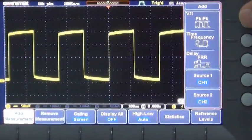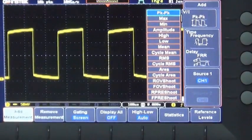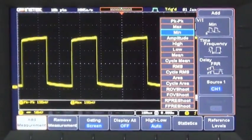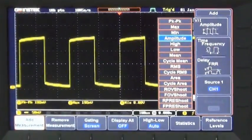Next, select P2P, select maximum, minimum, amplitude.